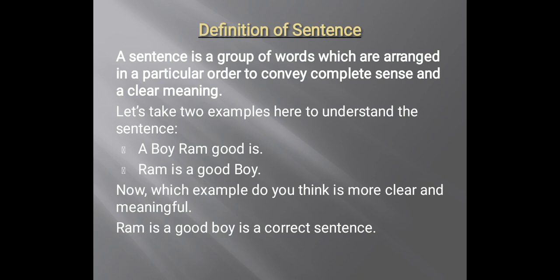The next slide is about the definition of a sentence. A sentence is a group of words which are arranged in a particular order to convey complete sense and a clear meaning. Let's take two examples here to understand the sentence. First example is: 'a boy Ram good is.' Second example is: 'Ram is a good boy.'